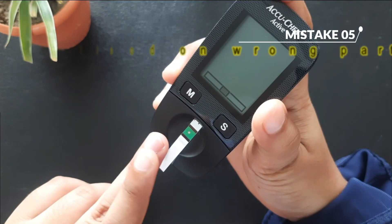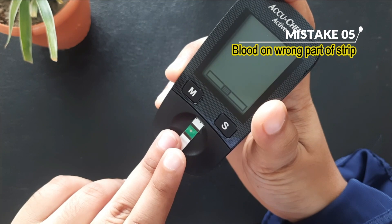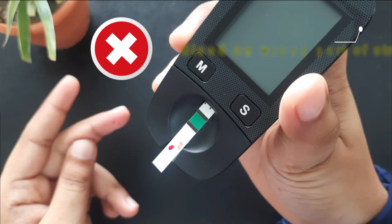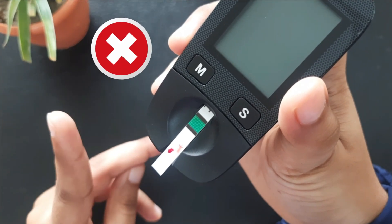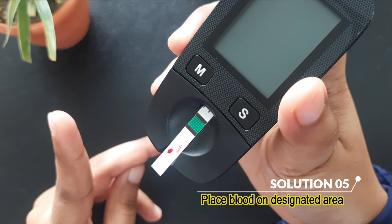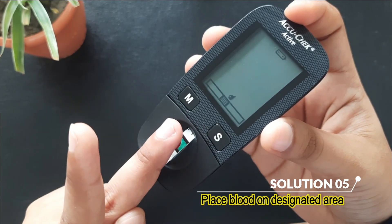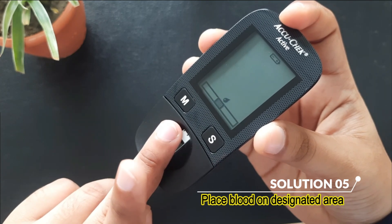Mistake 5: Applying blood to the wrong part of the strip. Solution is, place the blood on the designated area of the strip. Avoid smearing blood on other parts.